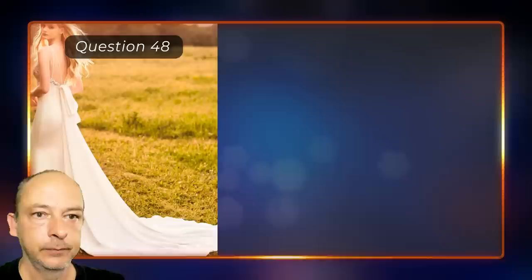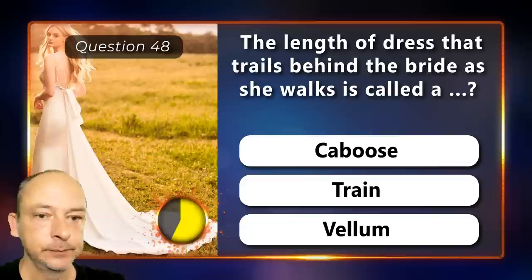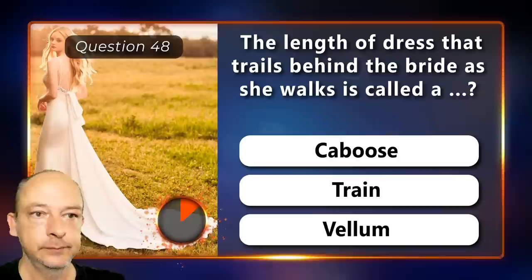The length of dress that trails behind the bride as she walks is called a caboose, a train, or a vellum. It is called a train.